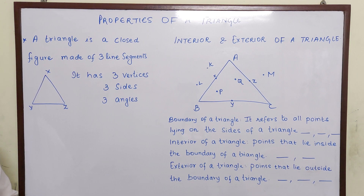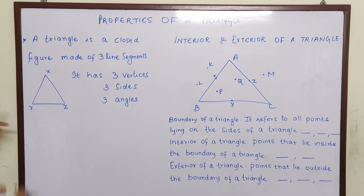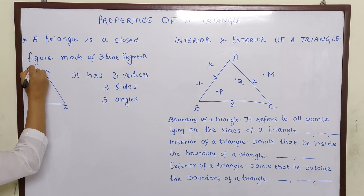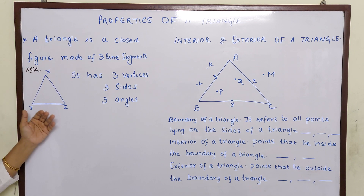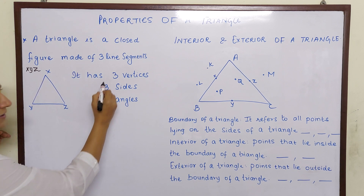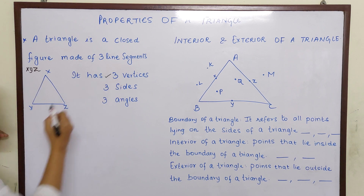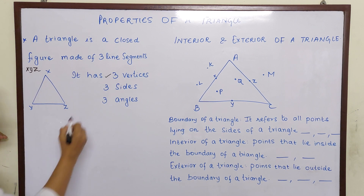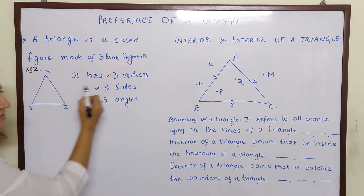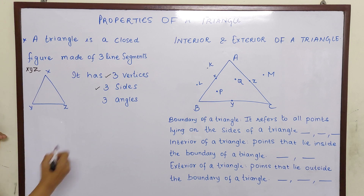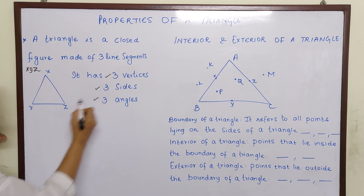But today we are going to learn new words. In a triangle — now this is a triangle X, Y, Z — you will have three vertices, three sides and three angles.